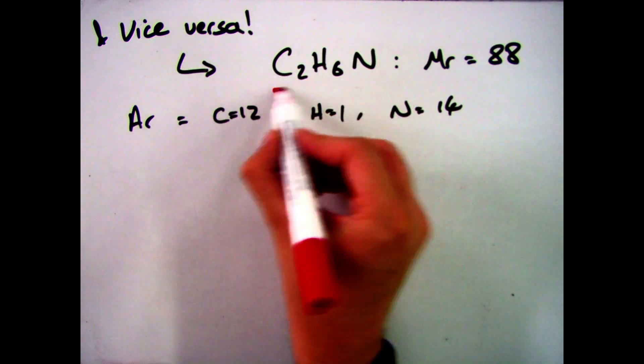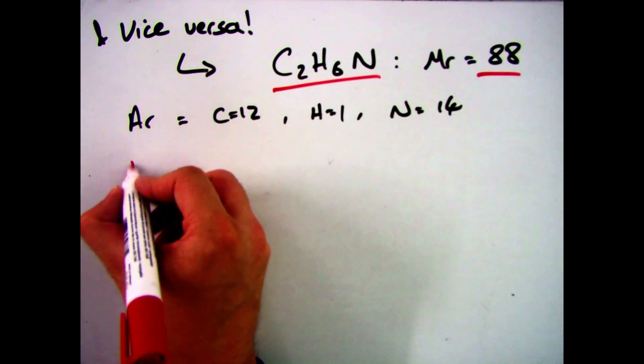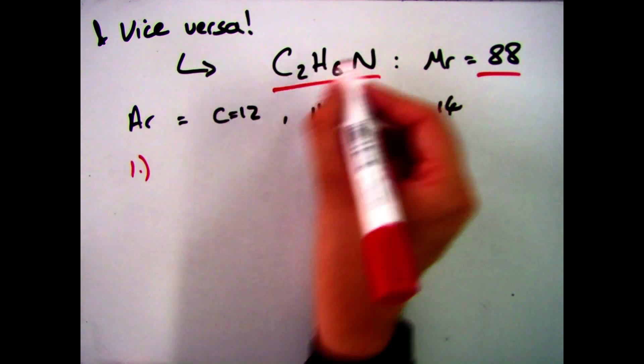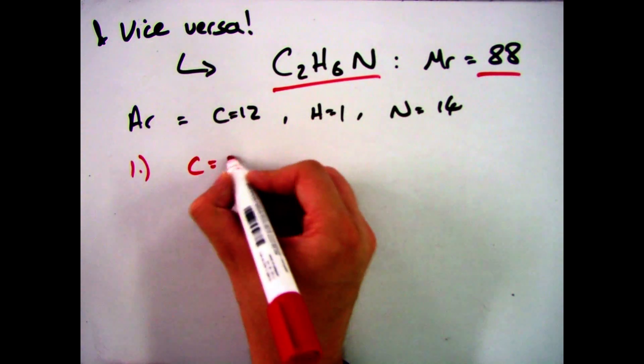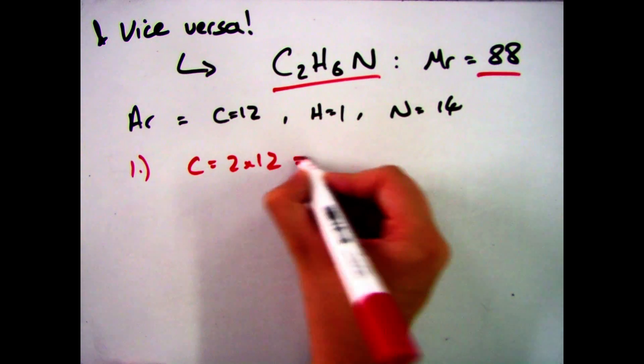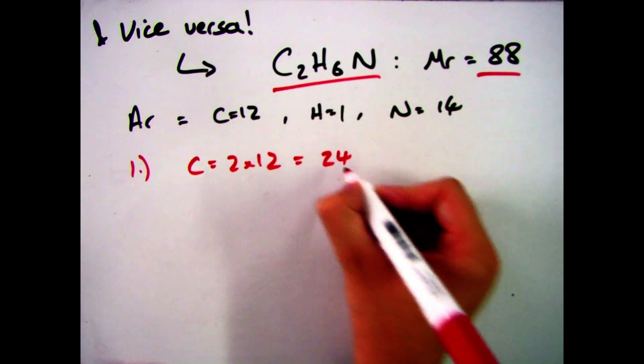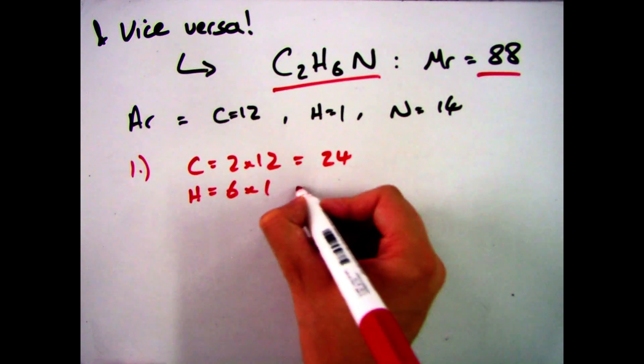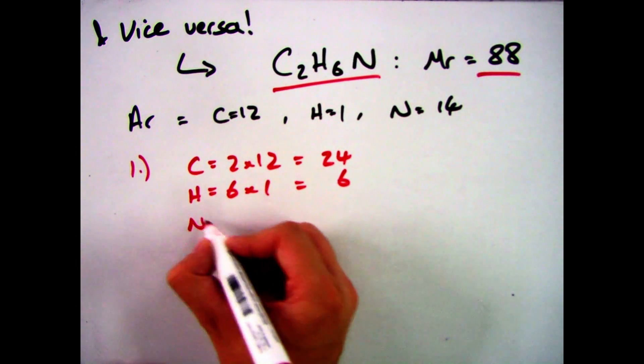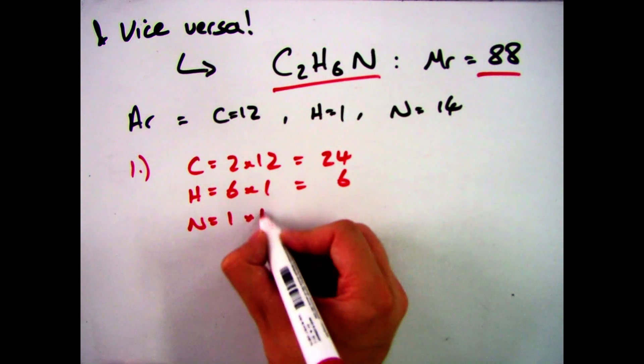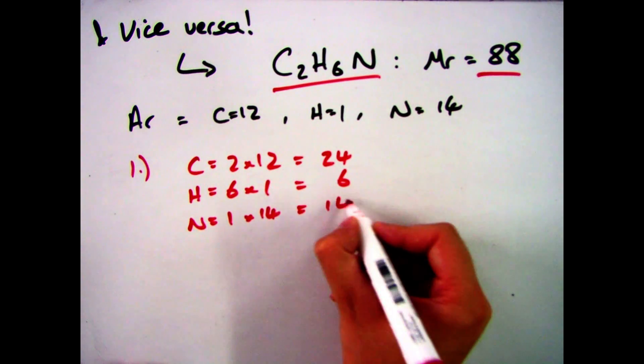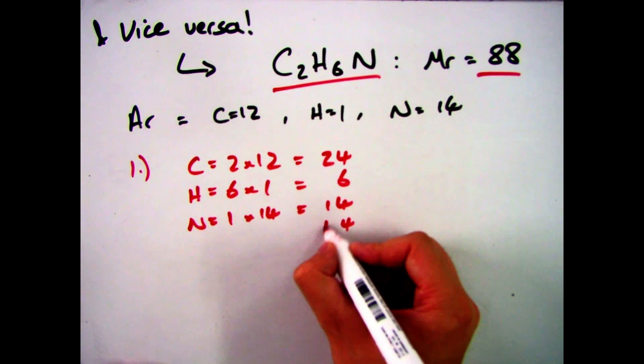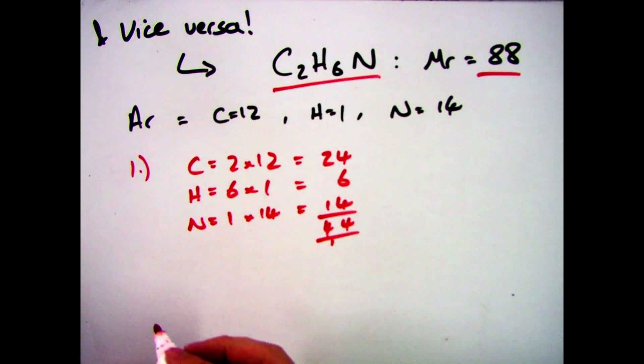If we look at another example then, where we've got C2H6N with an MR of 88, my first step is to work out the molecular formula of C2H6N. So I've got two carbons, which is 2 times 12, which gives me 24. I have 6 hydrogens, which is 6 times by 1, which gives me 6. And then I have 1 nitrogen, so 1 times by 14 gives me 14. Add those together, and that gives me 44.